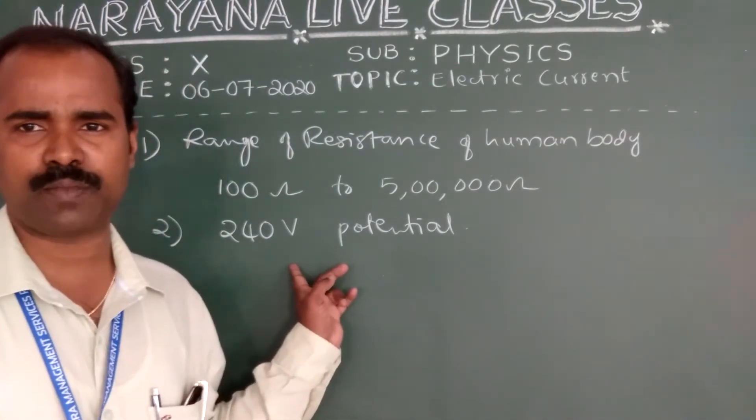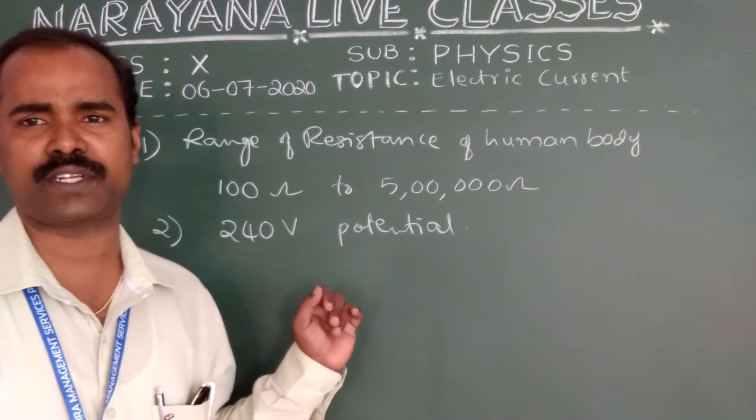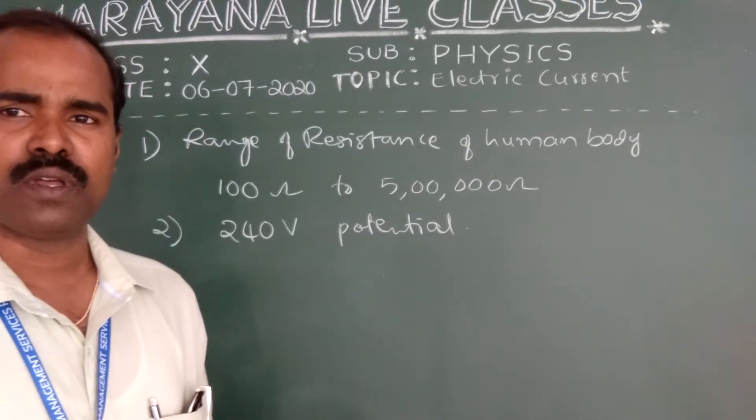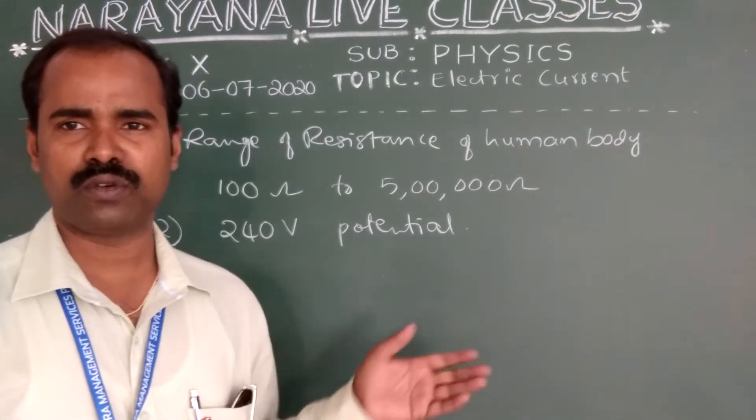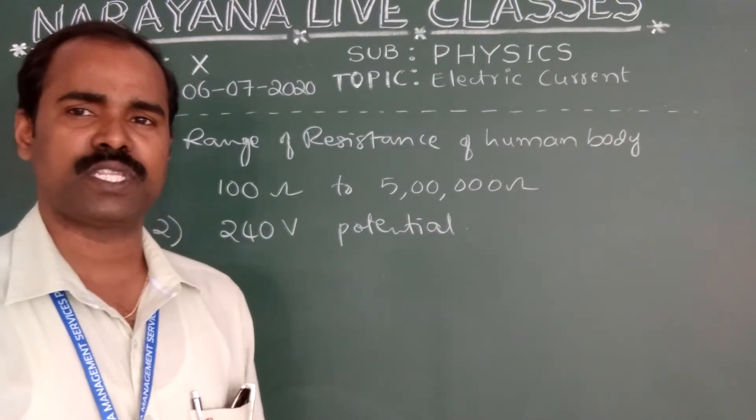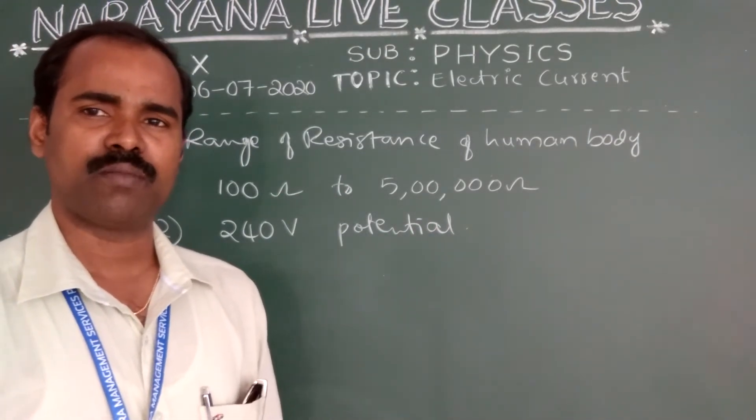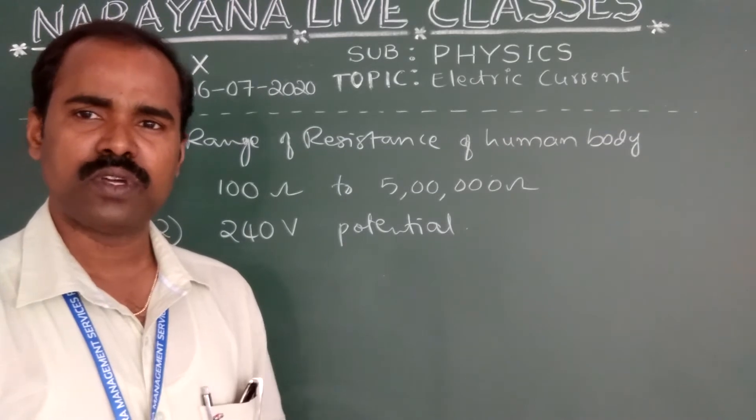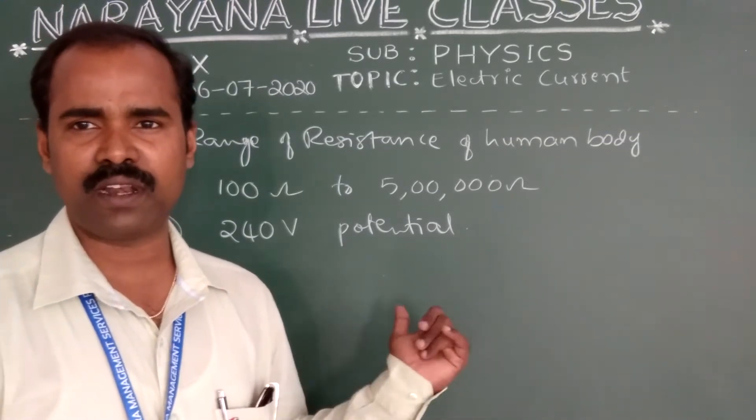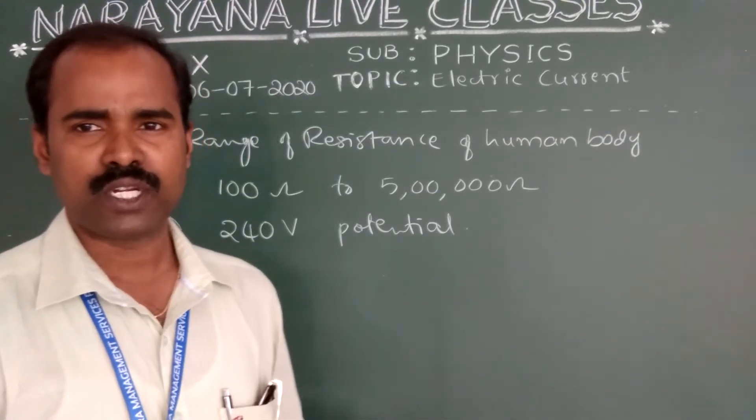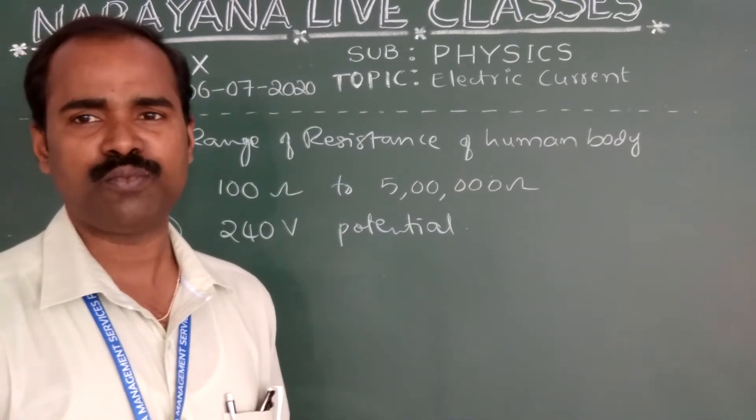Whereas industrial purposes, small scale and large scale industries, this may vary from 240 volts to step up transformers. They will use step up transformers by increasing that potential to some thousands. For example, electrical trains, they are using 25,000 volts of potential.